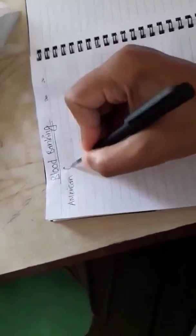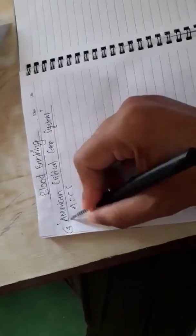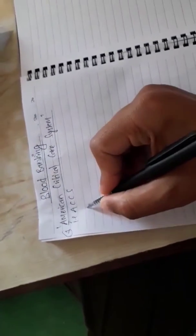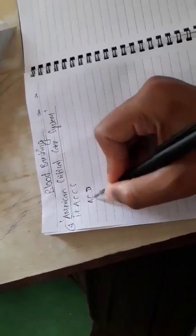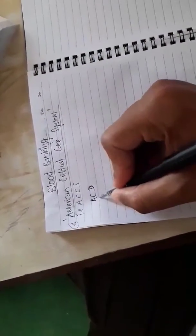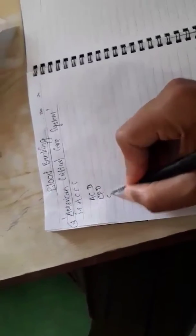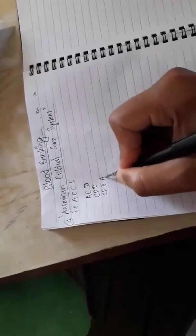The blood preservatives are very important. To remember them we have American Critical Care System protocol or mnemonic, that is ACCS. From A, ACD - acidified citrate dextrose is the preservative medium. From C, we have CPD - citrate phosphate dextrose as the preservative.